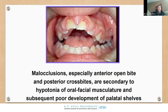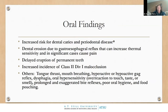We see increased risk for dental caries and periodontal disease — largely because of malocclusions. We see lots of dental erosion due to gastroesophageal reflux, which increases tooth sensitivity. We see delayed eruption of permanent teeth, Class II Division 1 malocclusions, tongue thrusting, mouth breathing, exaggerated gag reflex, problems with swallowing and talking, oral hypersensitivity, and prolonged and exaggerated bite reflexes.